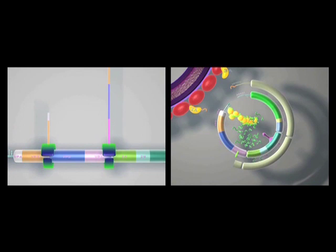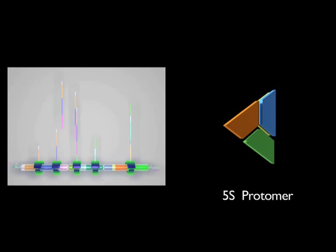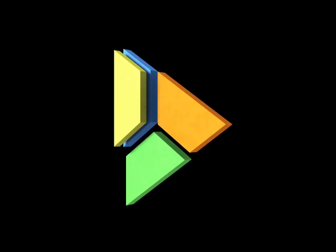Even at the early stage of infection, when the first structural proteins are cleaved, the first assembly intermediate, the 5S protomer, is formed. At this point, this is an immature structural unit.